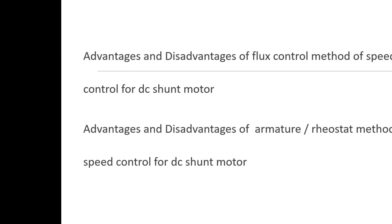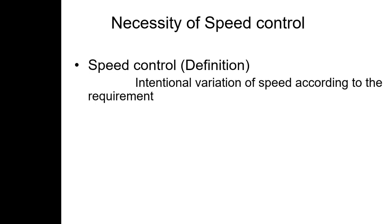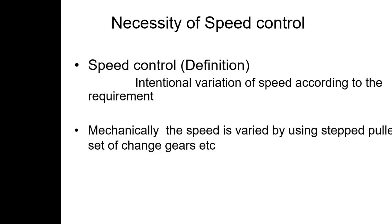We will also cover the advantages and disadvantages of the flux control method and the advantages and disadvantages of the armature control method. So the first topic is the necessity of speed control. Speed control is the intentional variation of speed according to the requirement.